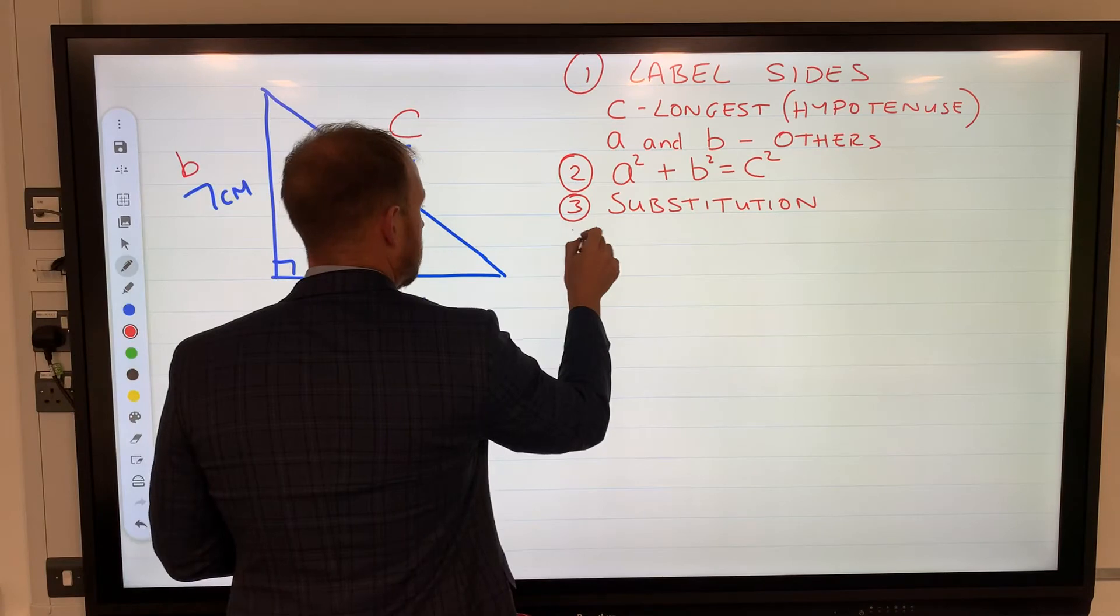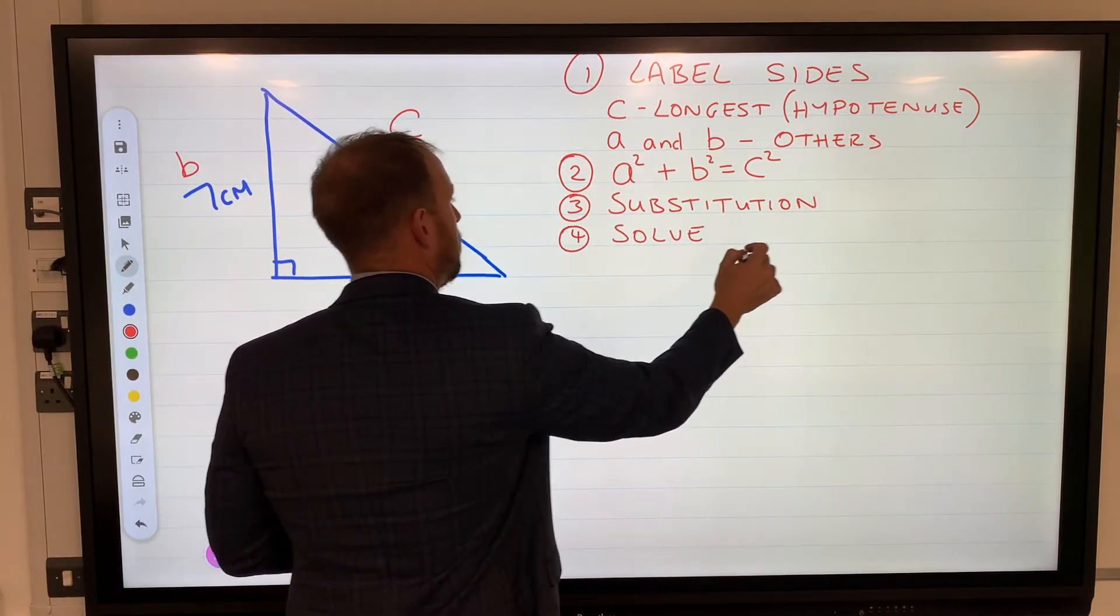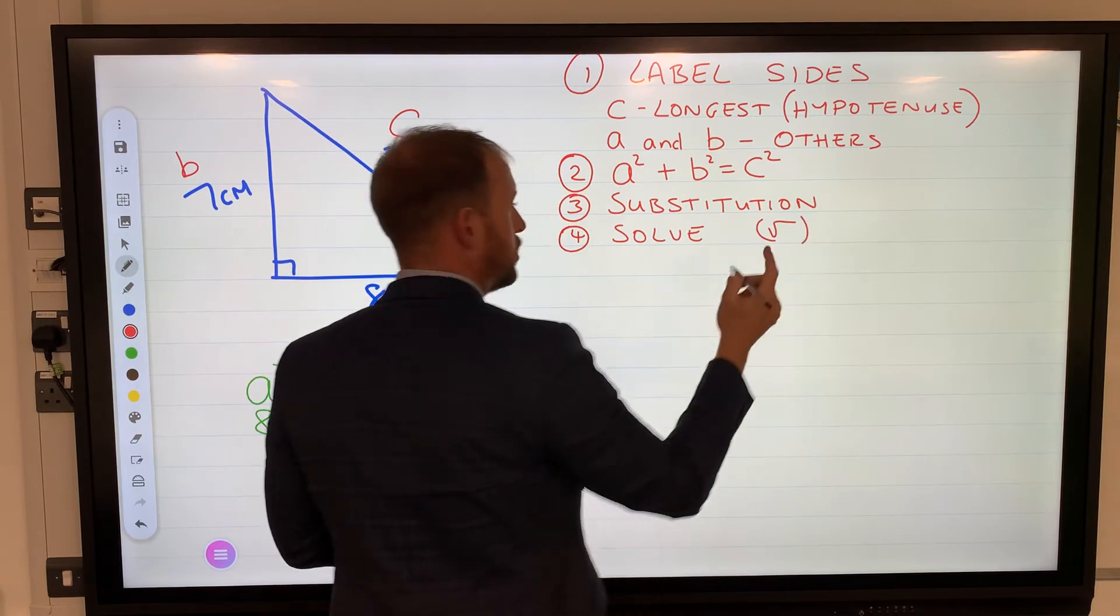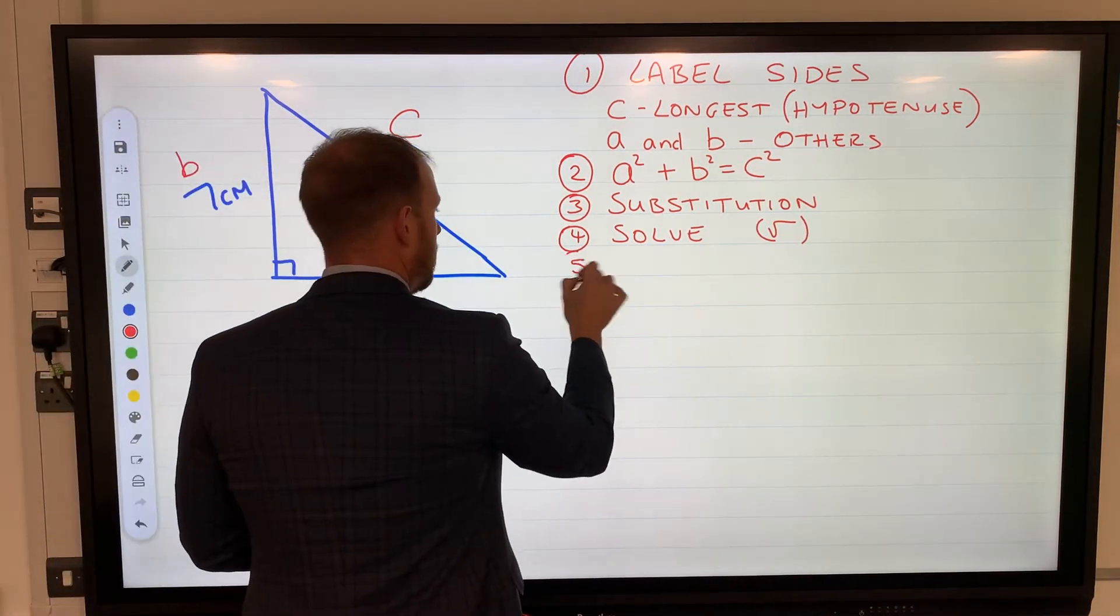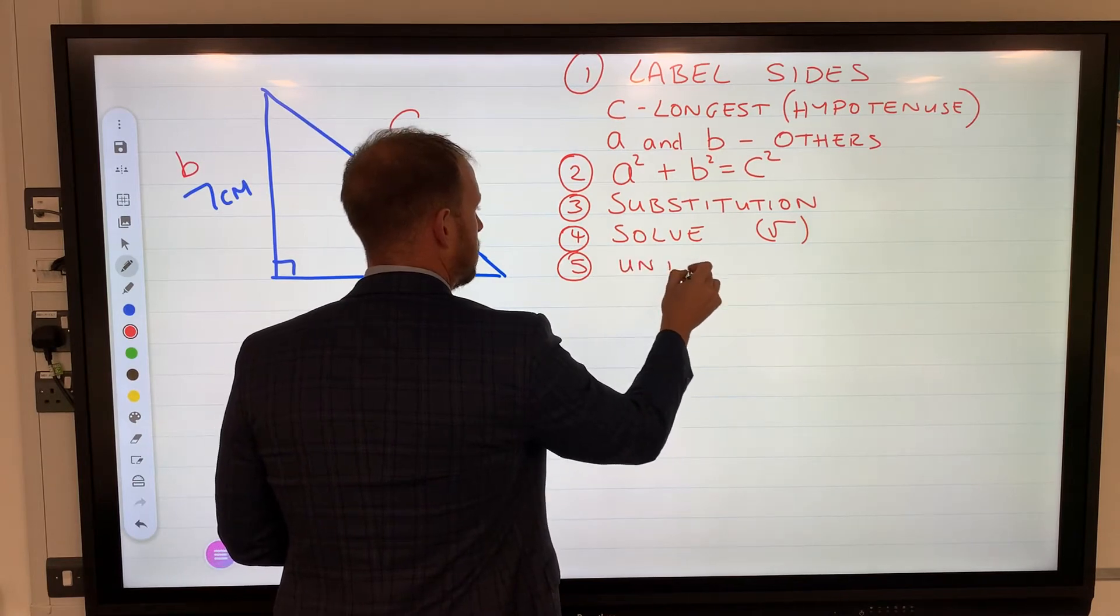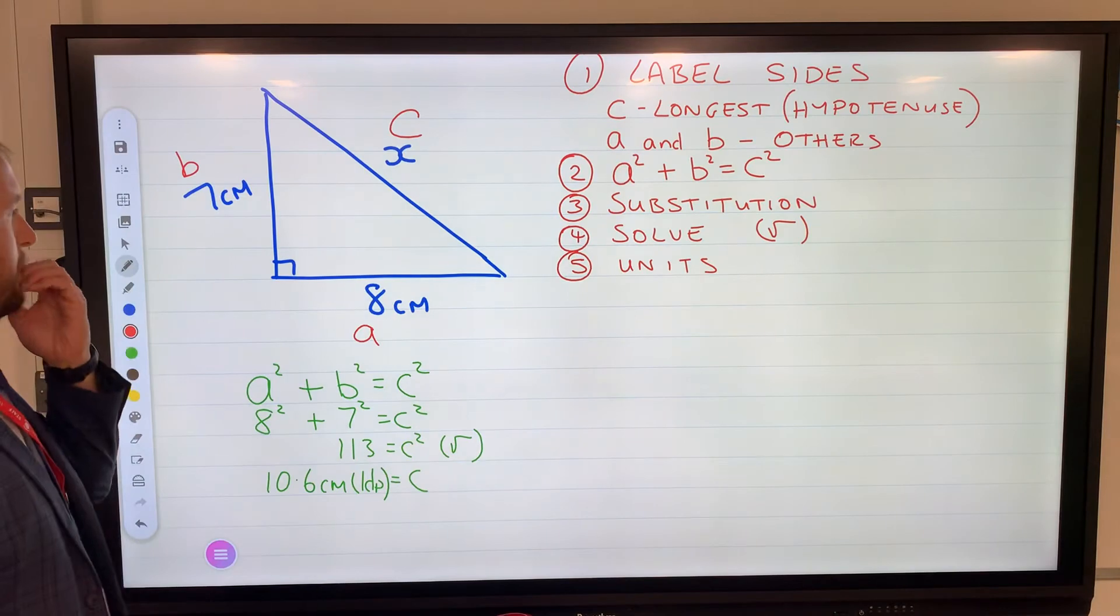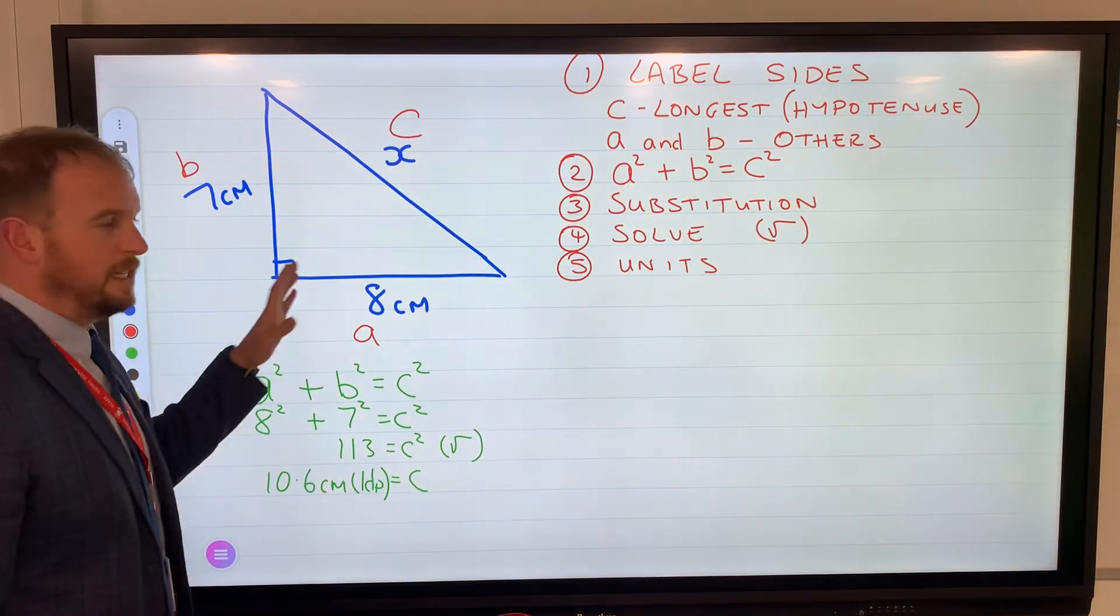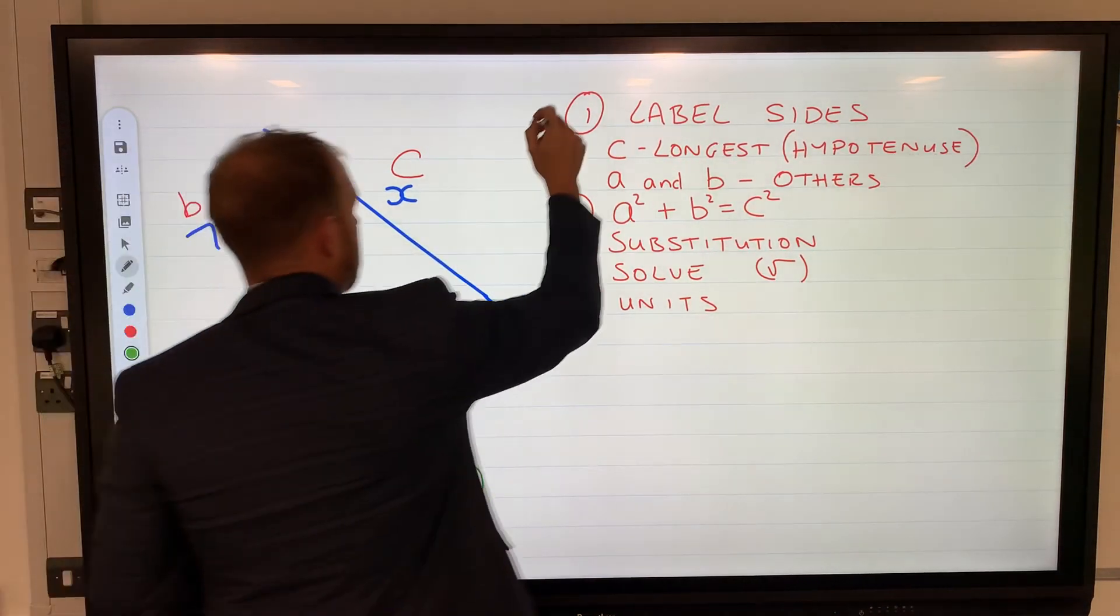So substitution, solve - I'm putting brackets here for the square root just to remind you, that's where people seem to make mistakes. Last step: units, so centimeters, feet, inches, whatever it may be. Majority of the time it's centimeters. There's our little step-by-step guide.